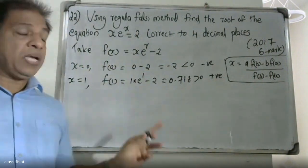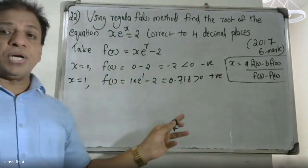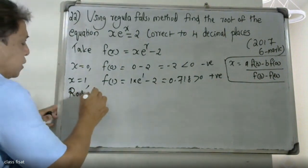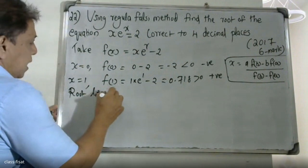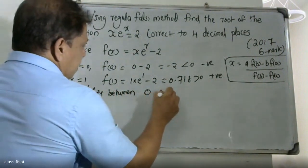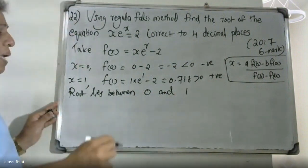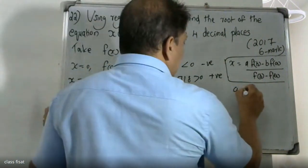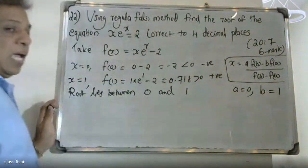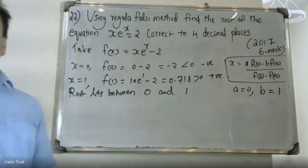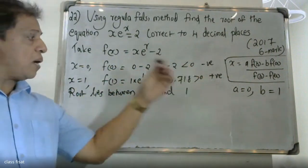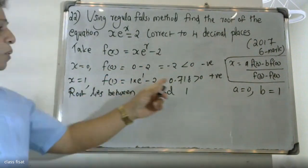Since f(0) is negative and f(1) is positive, the root lies between 0 and 1. Therefore, we set A = 0 and B = 1.